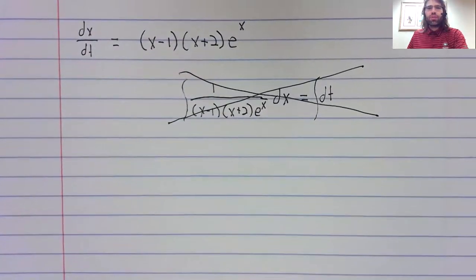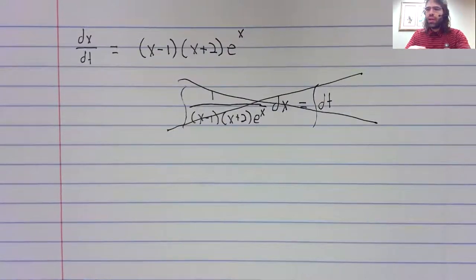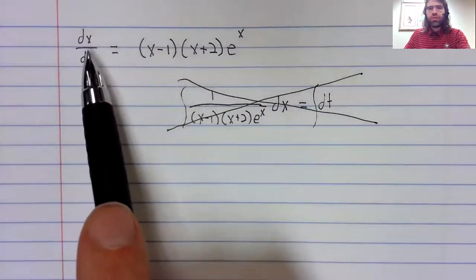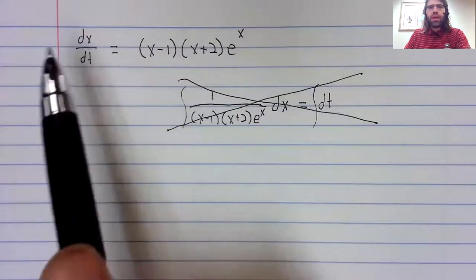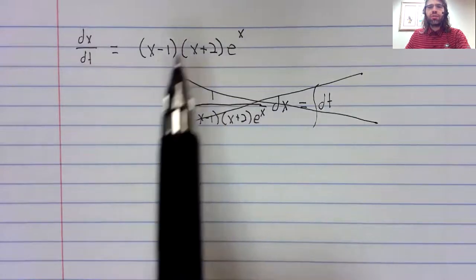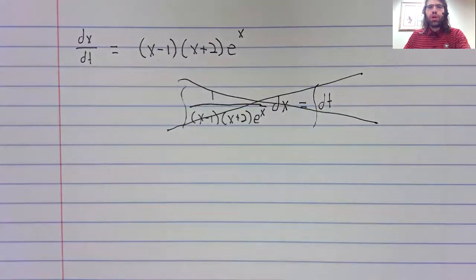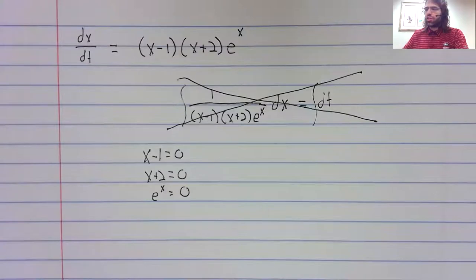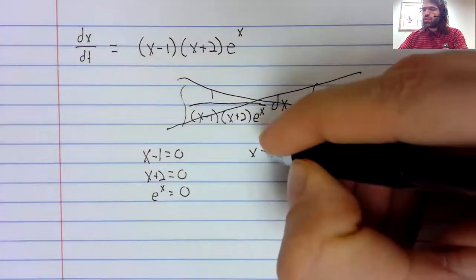We'll start with the observation that this thing has two fixed points. The zero product property says, remember that the fixed points are when the derivative is equal to zero. And the zero product property says that if you're multiplying things together and they equal zero, one of the things you're multiplying has to be zero. We're multiplying three terms, which gives us three potential fixed points.